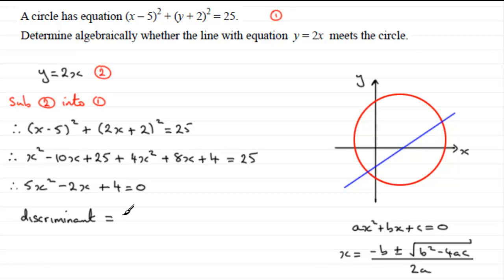So if I work that out: b² - b is -2, so if we square that we've got (-2)² minus 4 times a, which is 5, times the c value which is 4. And here we've got 4 - 80, that's going to leave me with -76.